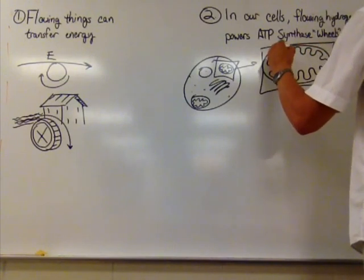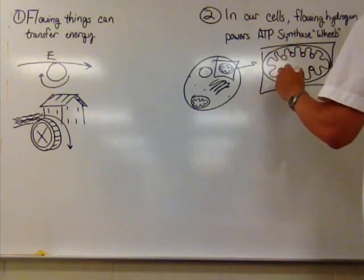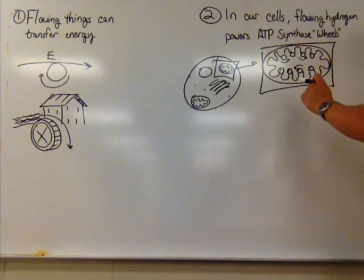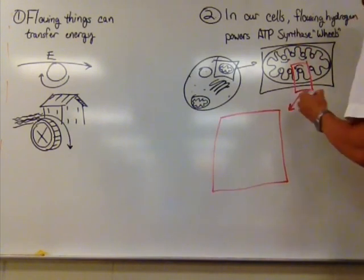Just like the mill was powered by water, we have water wheels, so to speak, inside the mitochondria of our cells. These wheels, when they turn, produce the energy our cells use.